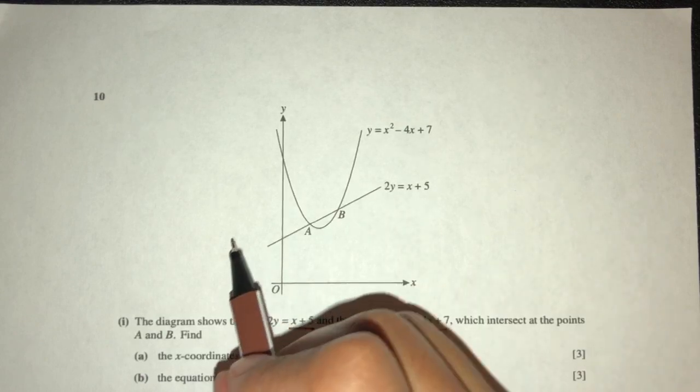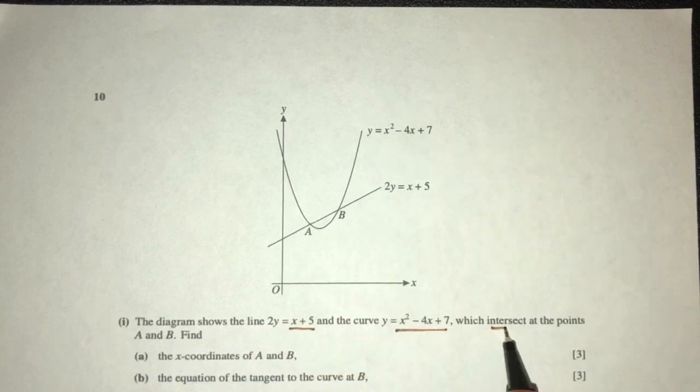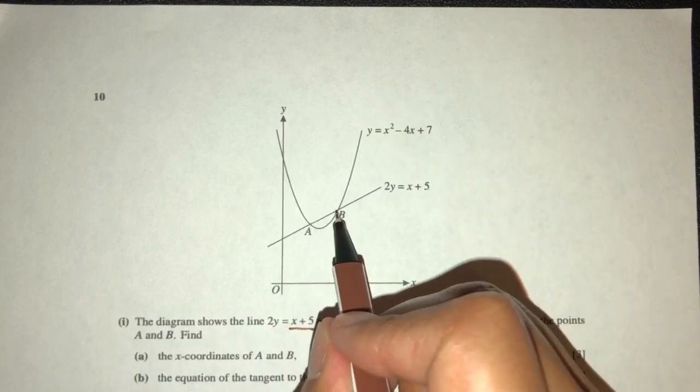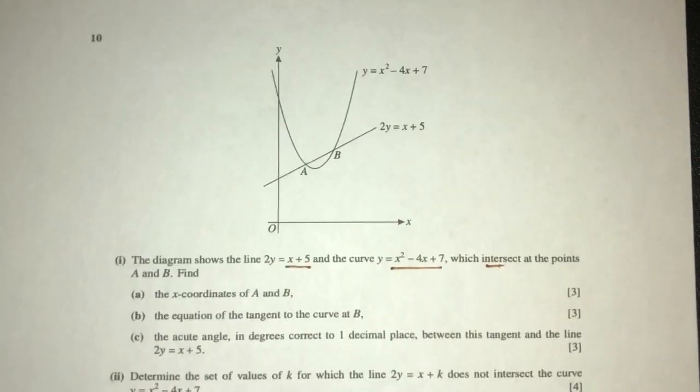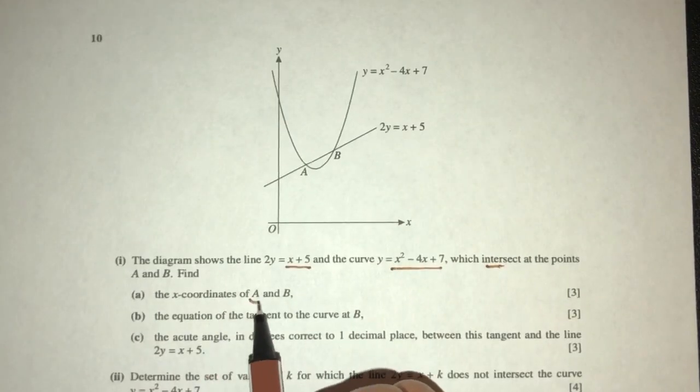This is the curve, as we can see right here, which intersect at the points A and B, as we can see clearly on the diagram. Part one, find the x value of A and B.